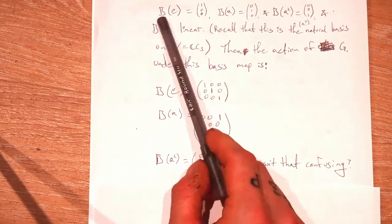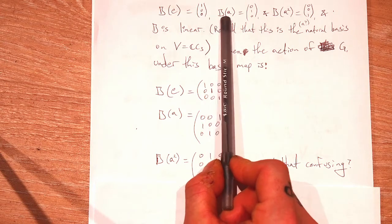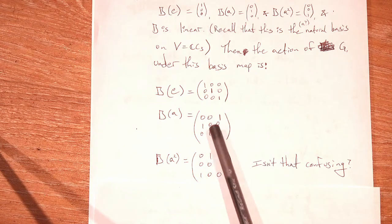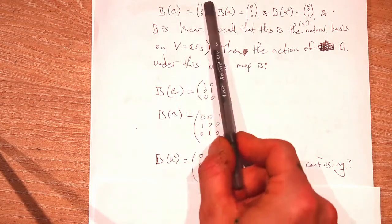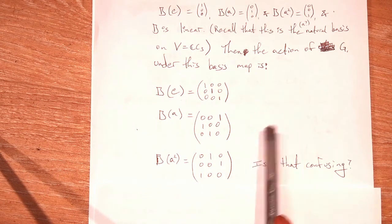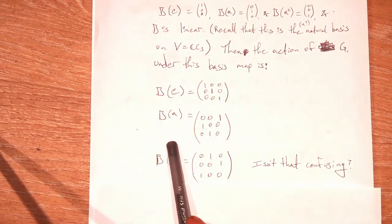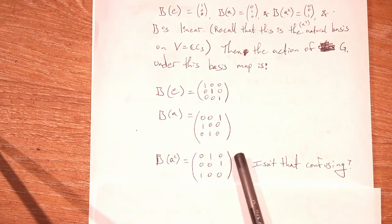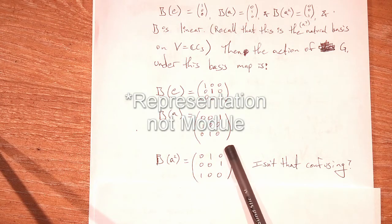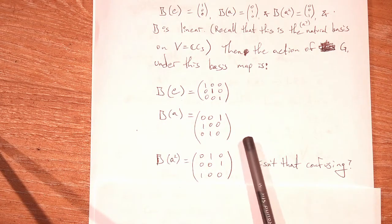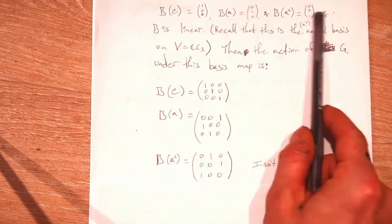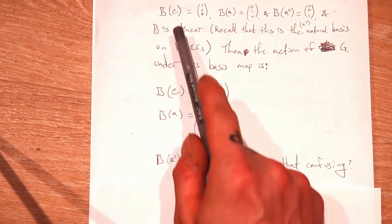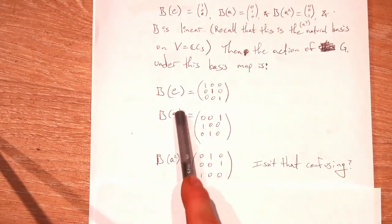Isn't that a little confusing? Because I just told you that our basis maps the identity to this guy, maps A to this guy, maps A squared to this guy. These guys are vectors. These guys are matrices. We have to remember that G generates our vector space and our action. So we have two copies of G that we're working with for the regular FG module. We are now constructing the regular FG module of some group G over F. We have two copies of the group — it's the vector space, and it's also generating an action on that vector space. So we need to know how our basis maps the vectors, but also how it maps the action.